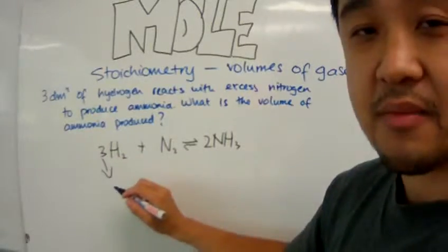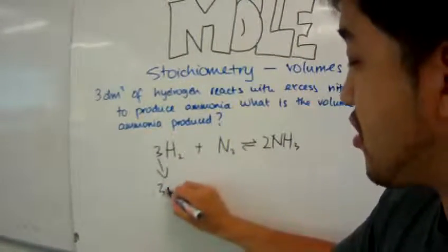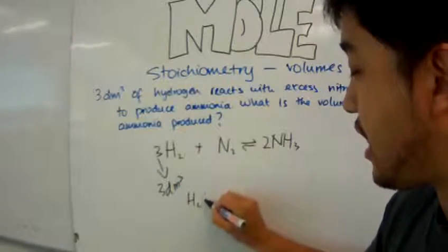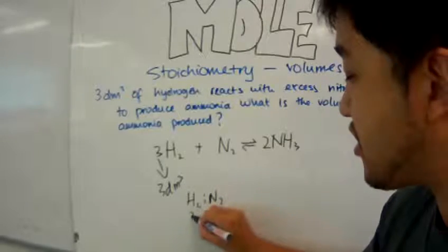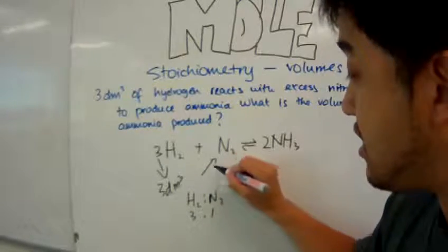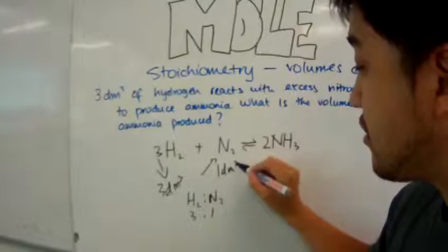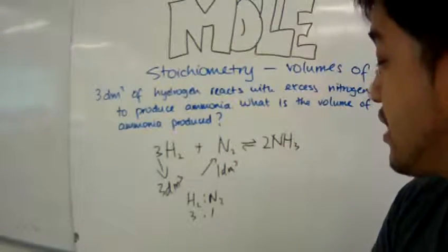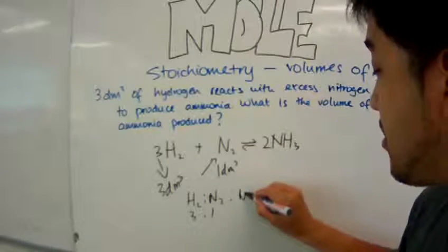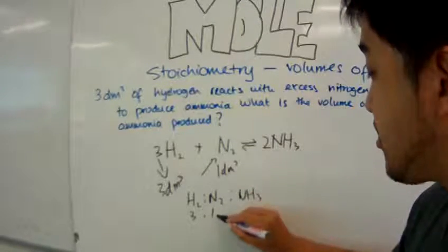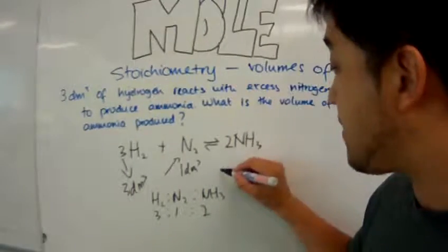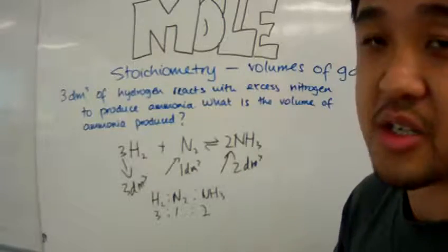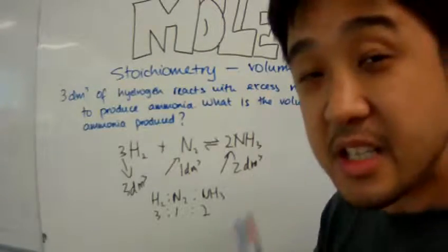And because hydrogen and nitrogen has a three-to-one ratio, we can immediately say that we need one cubic decimeter of nitrogen, and the ratio to ammonia is three-to-two. And so, we can say that we produce two cubic decimeters of ammonia. It is that easy.